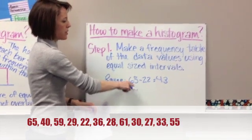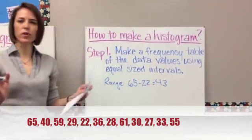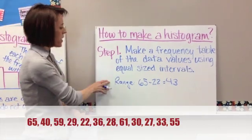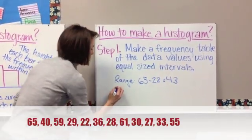And it's got a range of 43. So there's 43 different numbers in between those two. So once you find your range, now you want to figure out what your intervals are going to be.